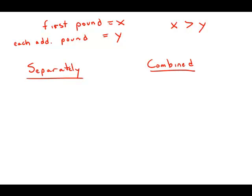If we mail them separately, that means we have a three pound package and separately a five pound package. The three pound package is going to cost X for the first pound plus 2Y for the remaining pounds. The five pound package, X plus 4Y. When we add them up for the total cost of mailing them separately, we get 2X plus 6Y.